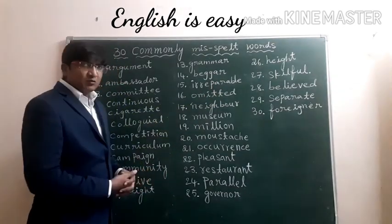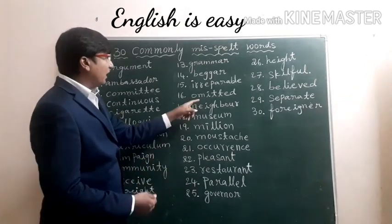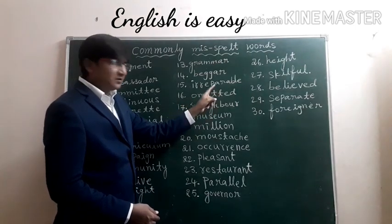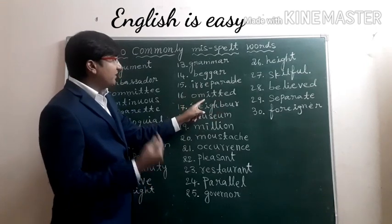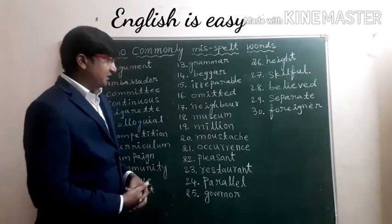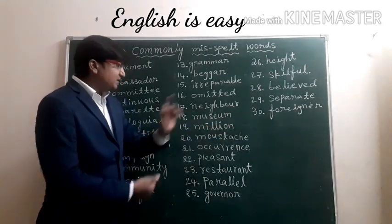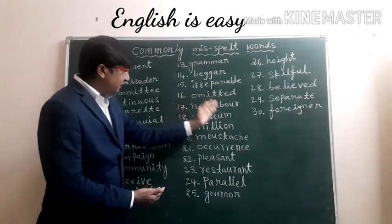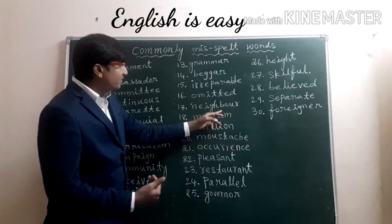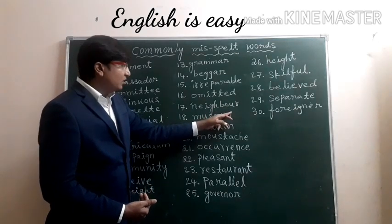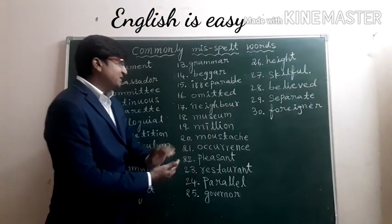Sixteenth one: Omitted. We just miss one T when we write it. But remember, in this word we have to write double T. Seventeenth one: Neighbor. The spelling of neighbor — when we write it, we sometimes miss the letter U. So remember, we have to write U in this spelling as well.